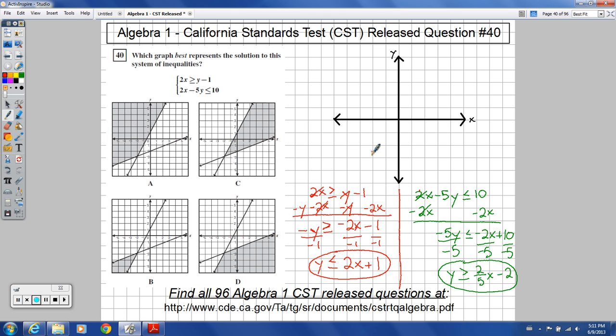So we've got y less than or equal to 2x plus 1. So your y intercept is at positive 1. So right here I'm drawing a point at positive 1. So y intercept is positive 1. Your slope is equal to 2.